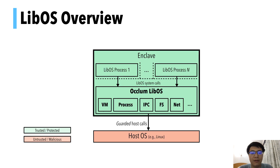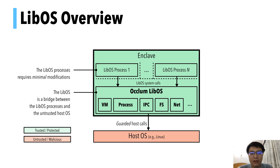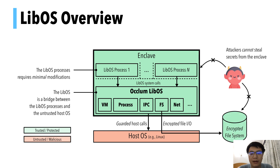Finally, let's look at our LibOS. All user processes reside in one enclave. The LibOS is the bridge between the process and the untrusted host OS. Process creation and IPC are done inside the enclave, but some IO like network requests are delegated to the host OS. Occlum implements an encrypted safe file system inside the LibOS. File data is protected in the enclave, and only encrypted data is written out to the host OS, so an attacker cannot steal secrets from Occlum or its file system directly.